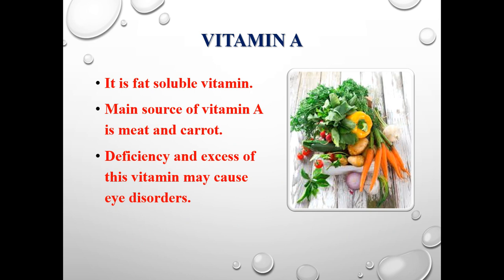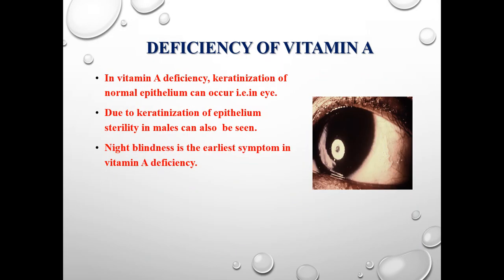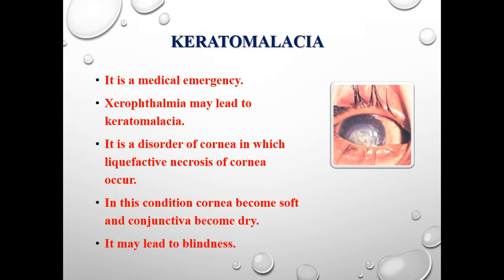Vitamin A maintains the normal epithelium of the eye and prevents keratinization of the normal epithelium. Deficiency of vitamin A in our body may primarily cause eye blindness, which leads to xerophthalmia, in which dryness of the cornea may occur. Xerophthalmia, if not treated, may become severe and is then named keratomalacia. Keratomalacia is a medical emergency in which ulceration and perforation of the cornea may occur, and also liquefactive necrosis of the cornea — meaning softening of the cornea — may also occur.